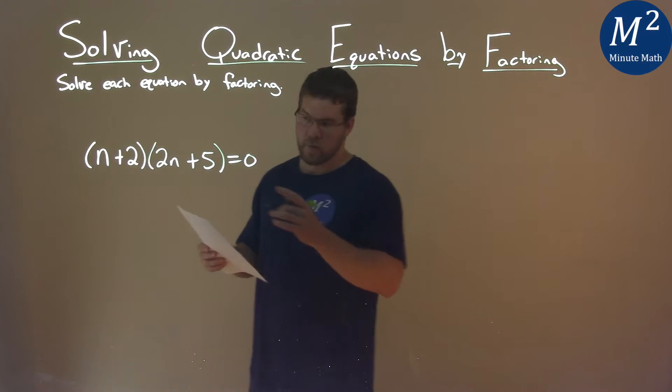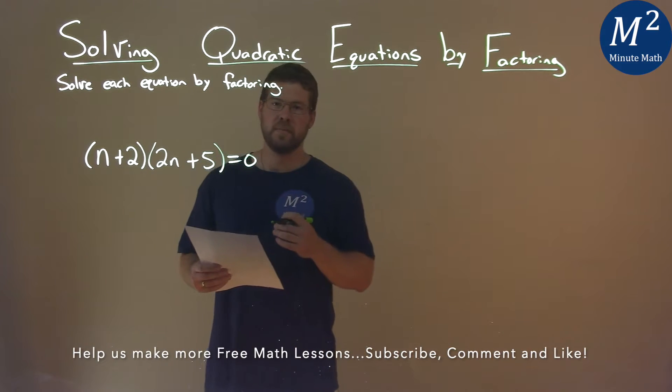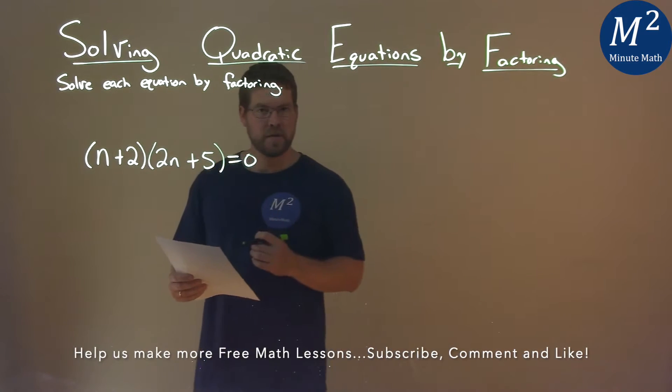We're given this problem right here: (n+2)(2n+5) = 0, and we need to solve this by factoring.